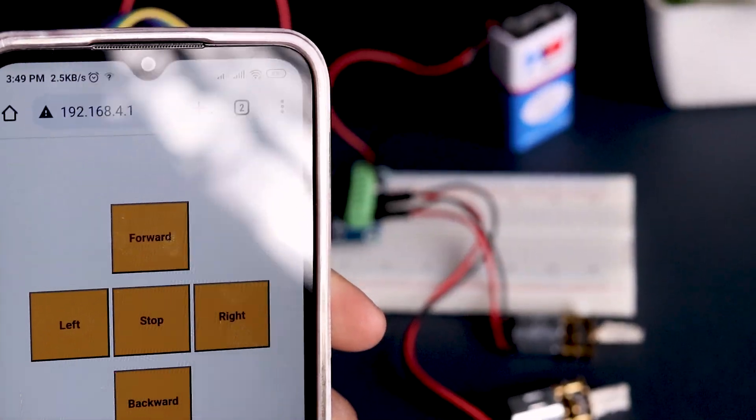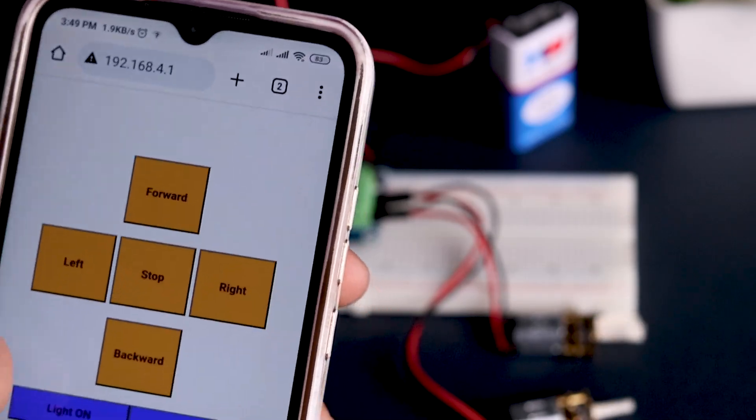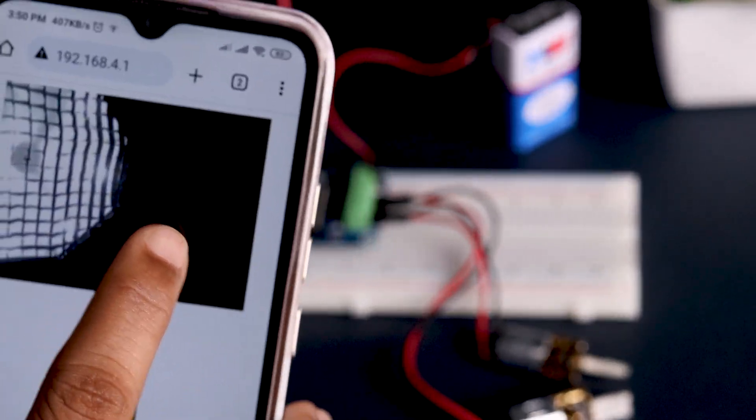For the right button, the right motor should be forward and left motor in reverse. For the left button, the left motor should be forward and right motor in reverse. All the buttons are working fine.